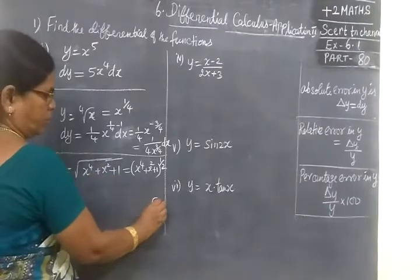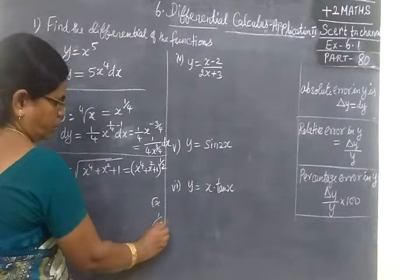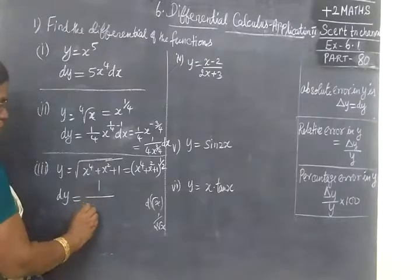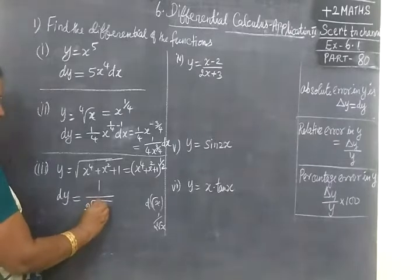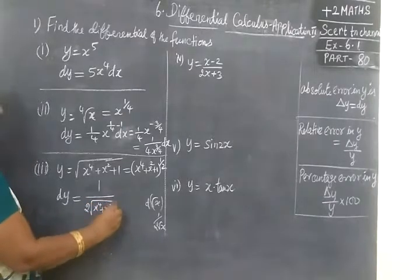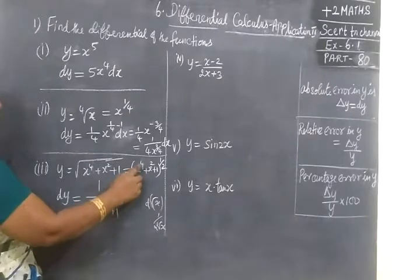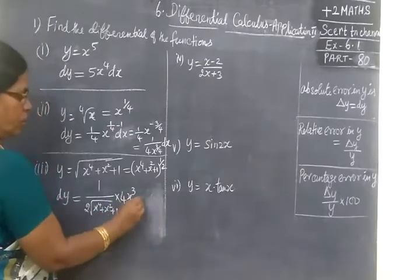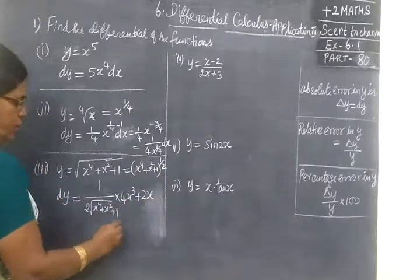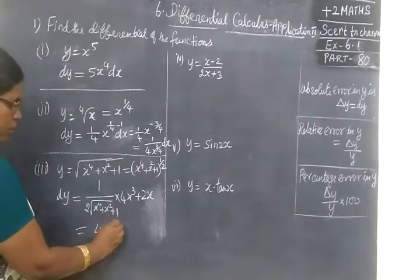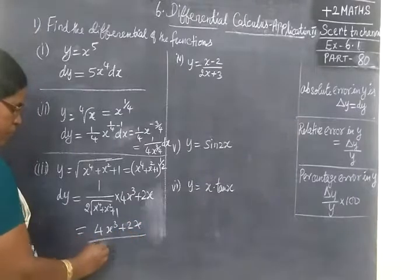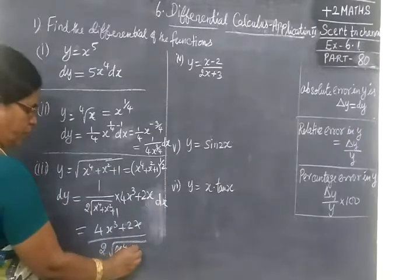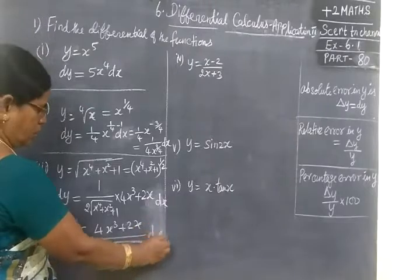So dy by dx, we are going to do 1 by 2 root x. Differentiation of root x equal to 1 by 2 root x. So 1 by 2 into root of x power 4 plus x power plus 1 into inner function. Differentiation 4x cube plus 2x plus 1 is 0. So 4x cube plus 2x by 2 into root of x power 4 plus x squared plus 1 dx.